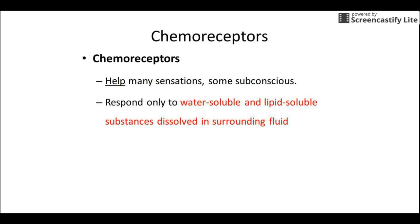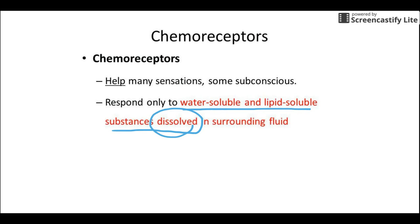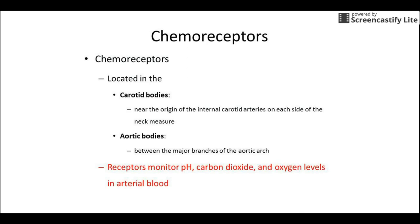The last category is chemoreceptors, which respond to water-soluble and lipid-soluble substances that are dissolved — they have to be dissolved. They also monitor things like pH, hydrogen ion concentration, carbon dioxide, and oxygen levels, making them important for cardiovascular function. They're most important for taste and smell: food dissolves in your saliva to trigger taste receptors, and chemicals dissolve in nasal mucus to trigger smell receptors.